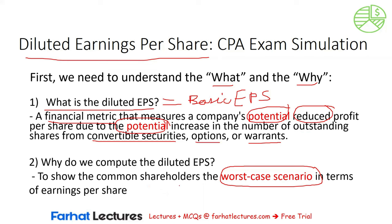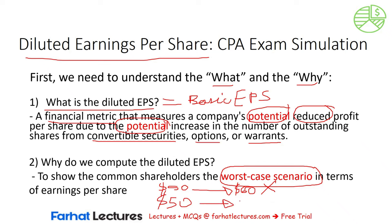For convertible securities, we're going to use the what-if method. So if the basic EPS is $50, what if the convertible securities were converted — what would happen to the basic EPS? If it would go up to $60, then we would disregard this convertible security and not include it in the computation of the diluted EPS. However, if the convertible securities may lead to a decrease in the basic EPS, then we include it in the computation of the diluted EPS.